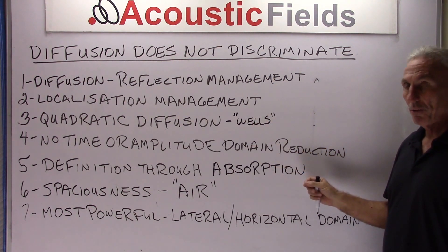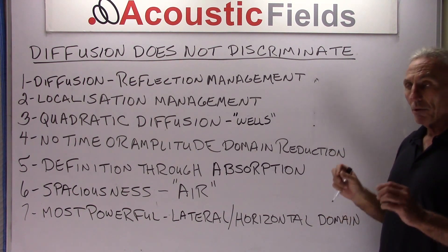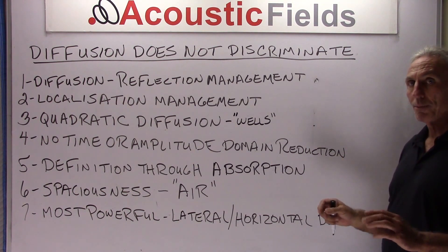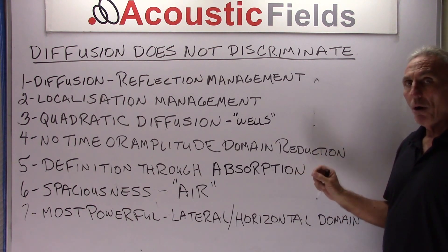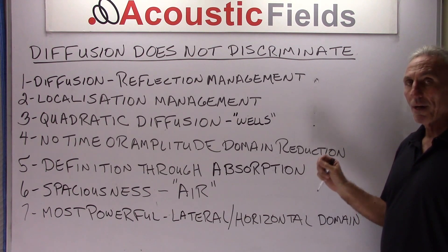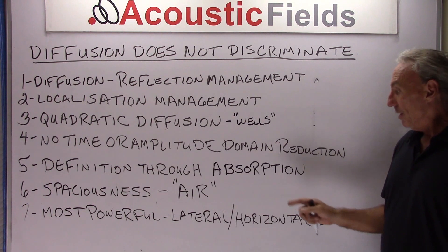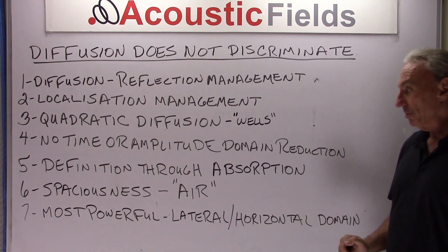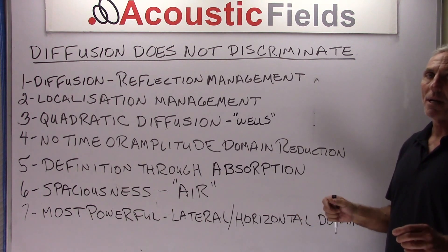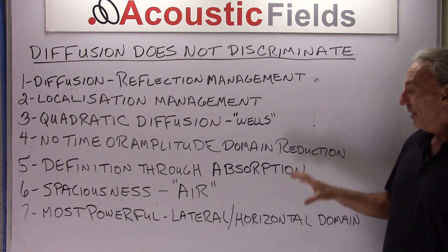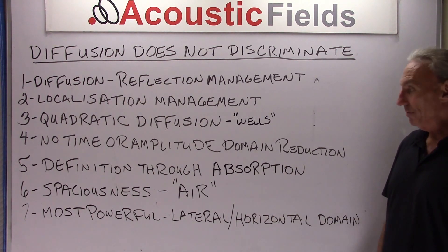How do you use it correctly? We get our definition through absorption — we look at the right rate and levels of absorption for the particular issue we're trying to address, always focusing on definition without over-absorbing. Once we achieve that definition through absorption, we then add our air or spaciousness through quadratic diffusion. Definition through absorption, spaciousness through diffusion.